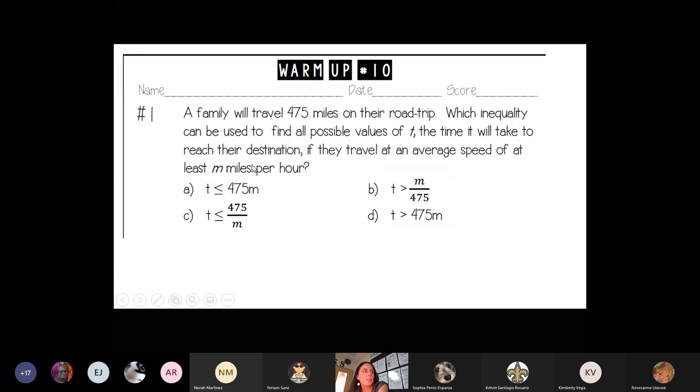Alright, so for our bell work today, warm-up number 10. A family will travel 475 miles on their road trip. Which inequality can be used to find all possible values of t, the time, it will take to reach their destination if they travel at an average speed of at least m miles per hour?